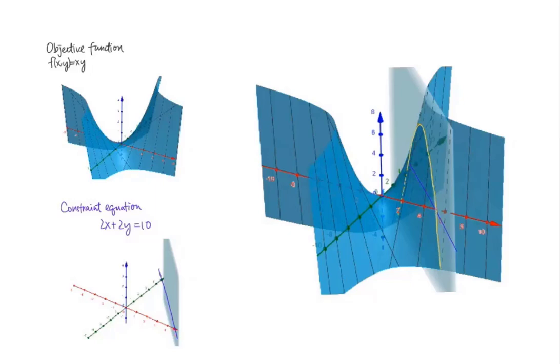The values of x and y we obtain from the Lagrangian method, that is, x equals y equals 2.5 in our case, gives the location at which the function output is maximum on this yellow line.